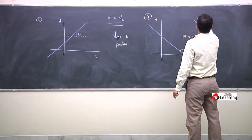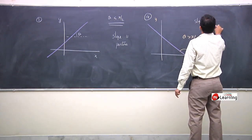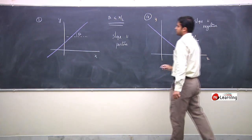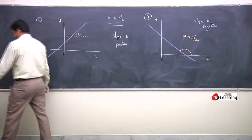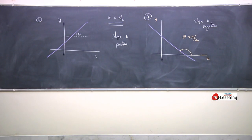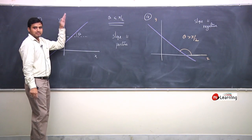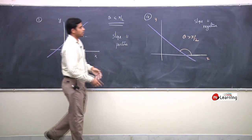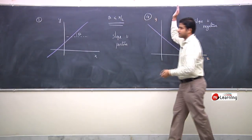Slope is negative. A positive slope becoming negative means the line is going in the negative x direction.